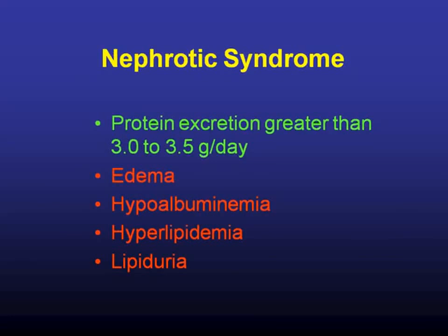Defining nephrotic syndrome — you will read different definitions. In general, we define it as protein excretion greater than three to three and a half grams a day, depending on whether you follow the three or three and a half gram threshold, as sometimes it depends on body habitus, and also serum albumin levels. So if someone has three grams of proteinuria and their albumin is 1.8, even though they're below three and a half grams per day, they definitely have clinically significant protein loss, so we would still define them as having nephrotic syndrome. Just the protein excretion alone is what we define as nephrotic range proteinuria. The syndrome itself includes edema, hypoalbuminemia, hyperlipidemia, and lipiduria.